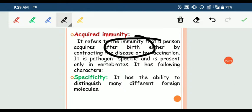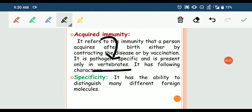This immunity develops after birth. Because it occurs after pathogen contact, it is pathogen specific. Acquired immunity is only present in vertebrates like fishes, birds, mammals, reptiles, and amphibians.